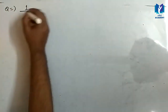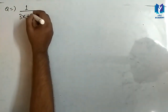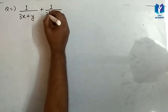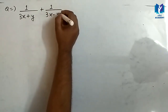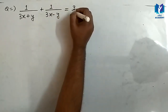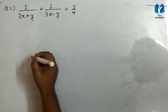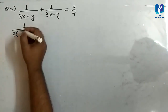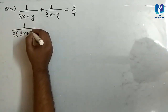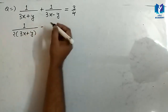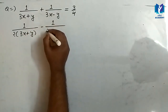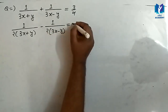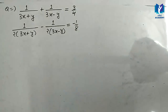1 upon 3x plus y, then plus 1 upon 3x minus y, which is equal to 3 upon 4. Another one is, 1 upon twice of 3x plus y, minus 1 upon twice of 3x minus y, is equal to minus 1 upon 8.